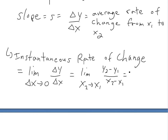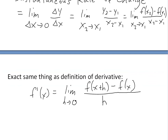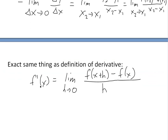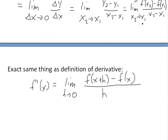You know what y2 and y1 are in terms of f of x. So this becomes the limit as x2 approaches x1 of f of x2 minus f of x1, all over x2 minus x1. This is actually the exact same thing as the definition of the derivative, f prime of x — usually written as the limit as h approaches zero of f of x plus h minus f of x, divided by h.